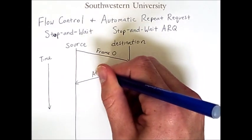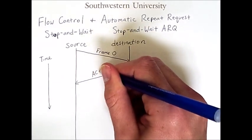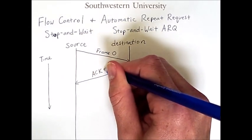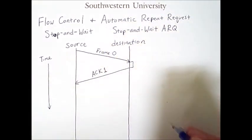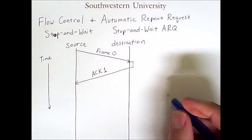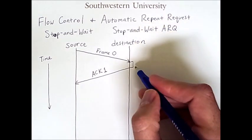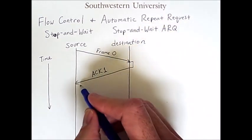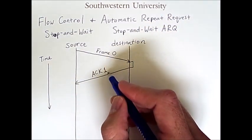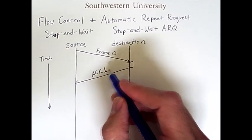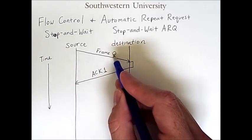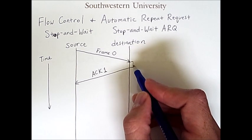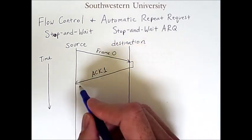This acknowledgement frame has a one associated with it. The destination is telling the source that it is ready to receive frame one — it has already received frame zero, and it is acknowledging that by saying: you can send frame one now.